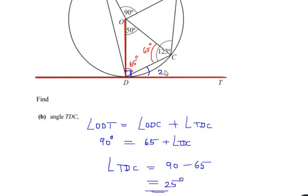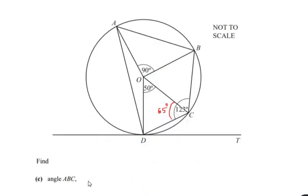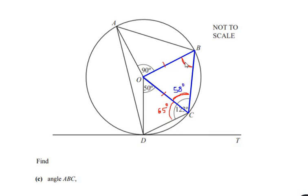So angle TDC is 25 degrees. Now let us find part C: find angle ABC — we are supposed to find angle ABC. To find this angle, let us consider triangle OBC. Triangle OBC also acts as an isosceles triangle because sides OB and OC are the radius of the same circle, so angle C equals part of angle B. In part A the angle C was 65 degrees, but the total angle BCD is 123 degrees, so the remaining part of angle C is 123 minus 65, which gives 58 degrees.